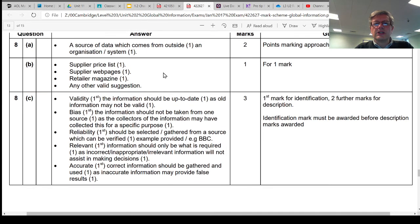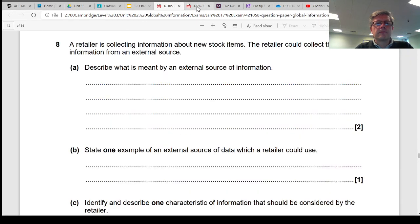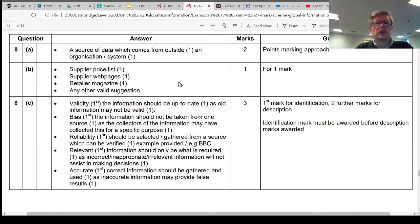So all you need to do here is explain for two marks what's meant by an external source. So it's a source of data which comes from outside the organization or outside the organization's systems. Simple. Two marks.